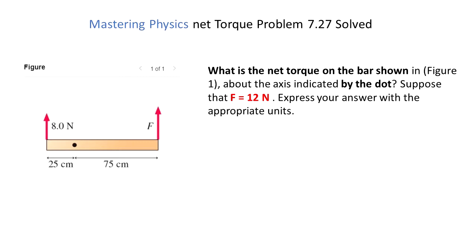Hello guys! We need to find the net torque applied on the bar shown below about the axis indicated by the black dot. So we see we have a black dot and we have two different forces applied at the edge of the bar.